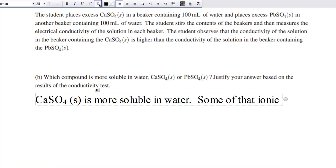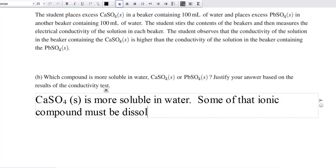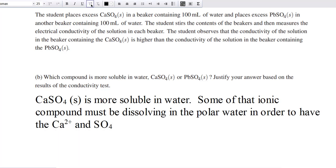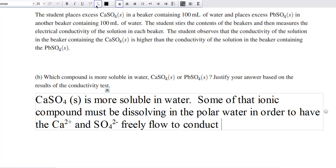Which means some of that ionic compound must be dissolving in the polar water in order to have the calcium with a positive 2 charge and the sulfate with the negative 2 charge, freely flow to conduct electricity.